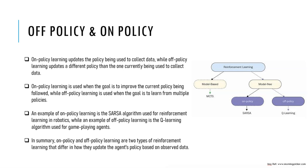Off policy learning, on the other hand, involves learning from a different policy than the one currently being used to collect data. The agent learns by estimating the value of different policies and selecting the one with the highest expected reward. One example of off policy learning is Q-learning, which we will see in the next tutorial.